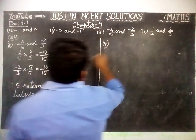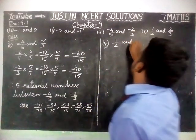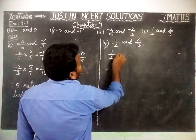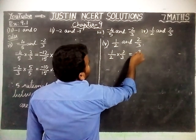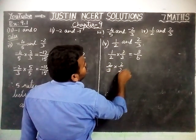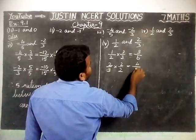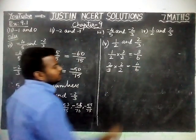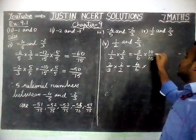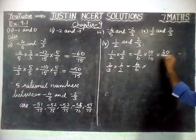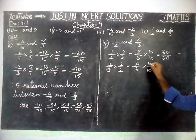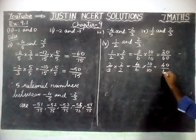Next, fourth question: find 5 rational numbers between 1 by 2 and 2 by 3. Here, we have to convert into a common denominator. So, 1 by 2 into 3/3 equals 3 by 6. Next, 2 by 3 into 2/2 equals 4 by 6. Now we are going to multiply by 10/10: 3 by 6 into 10/10 equals 30 by 60. And 4 by 6 into 10/10 equals 40 by 60.